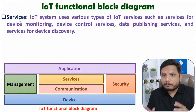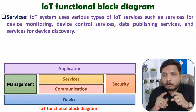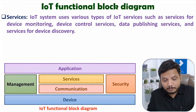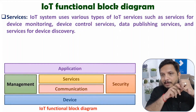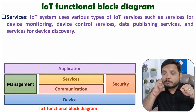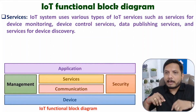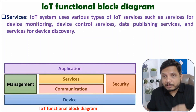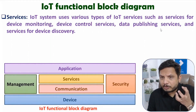The next section is services. An IoT system has different types of services. These include device monitoring, where we monitor the device and observe its parameters such as its location. Then there are device control services. Sensors sense data, and whatever data is sensed needs to be sent to the cloud. To send it to the cloud, we have to give commands to the sensors. At the same time, there will also be an application on the cloud that will give commands to the actuator.